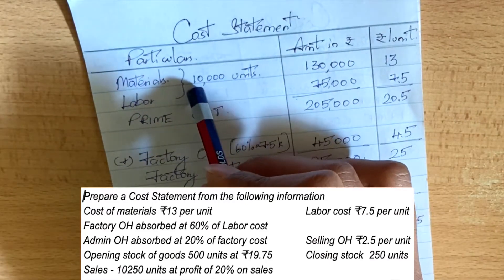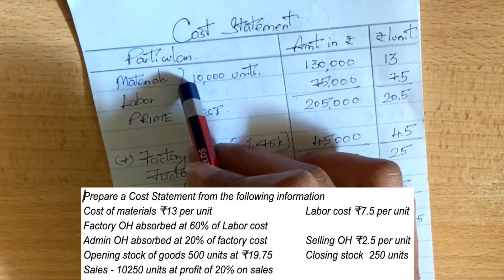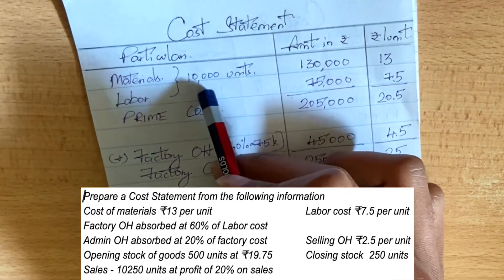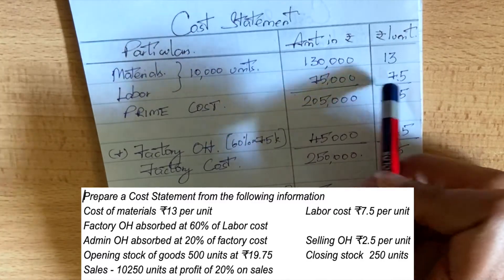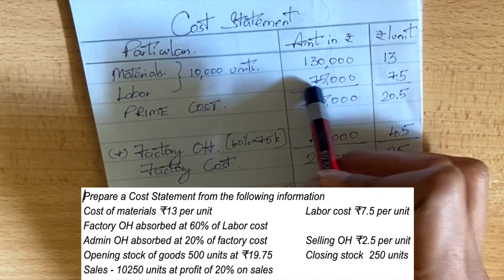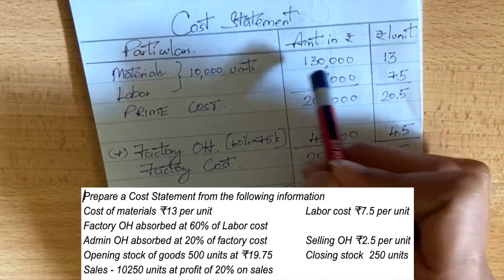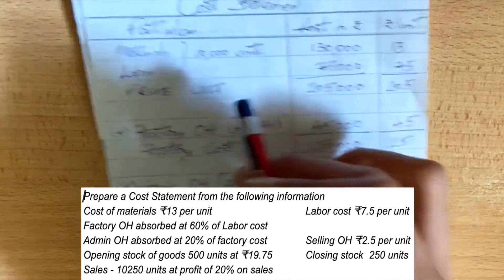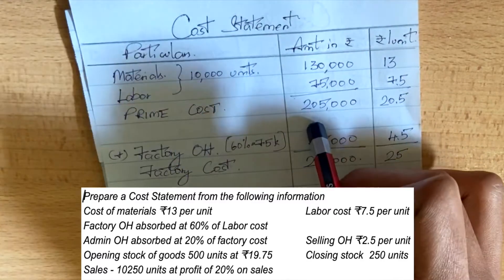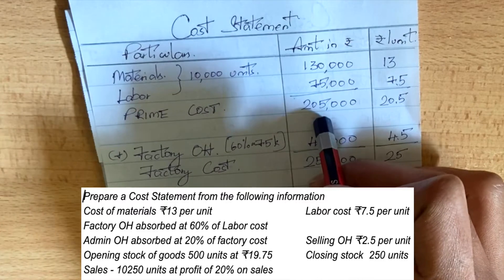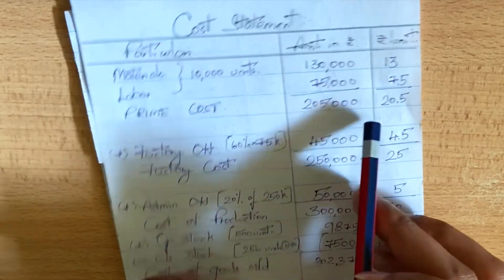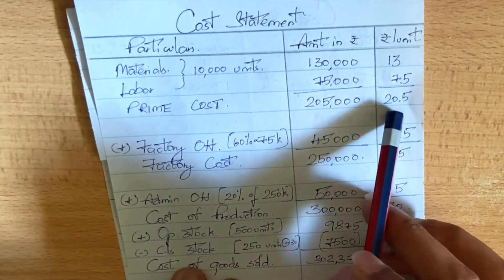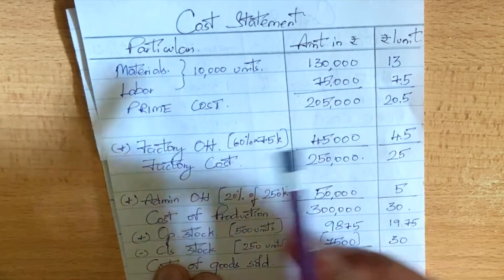We have to sell it for 10,000 units, so 10,000 into 7.5 for labor cost. The total prime cost is 2,50,000. Per unit, obviously, 20.5.